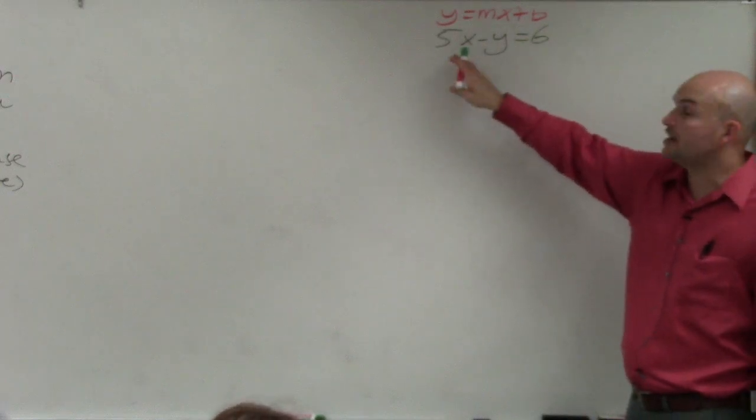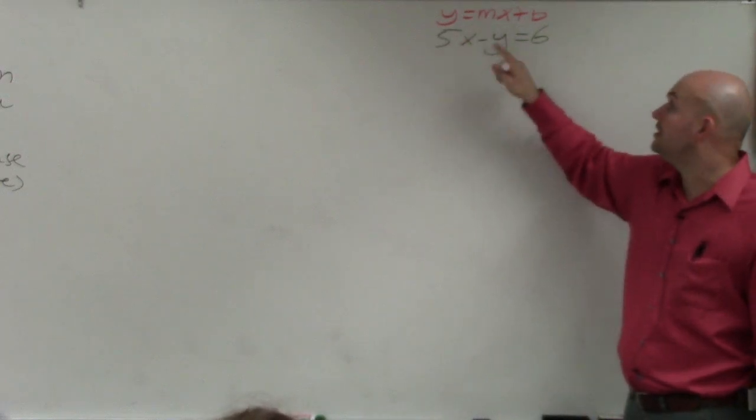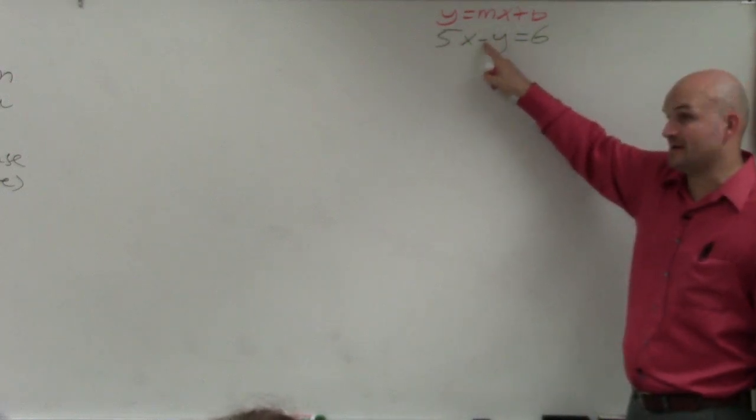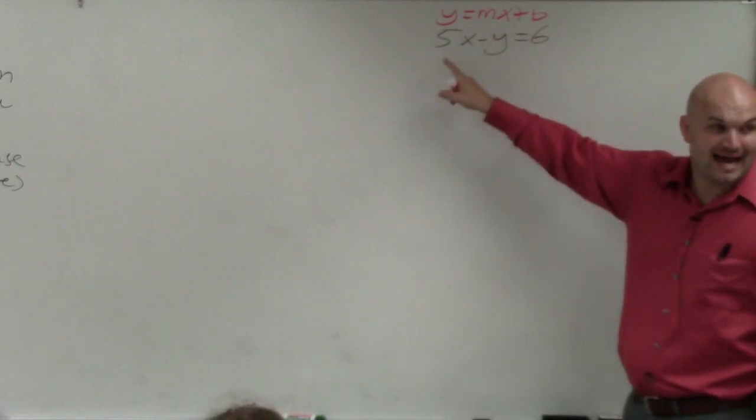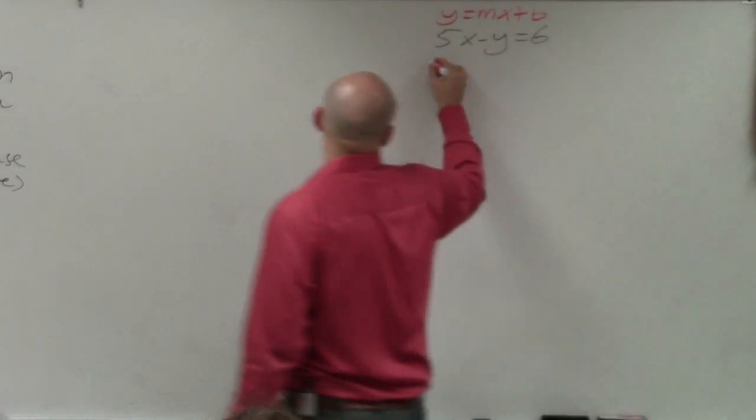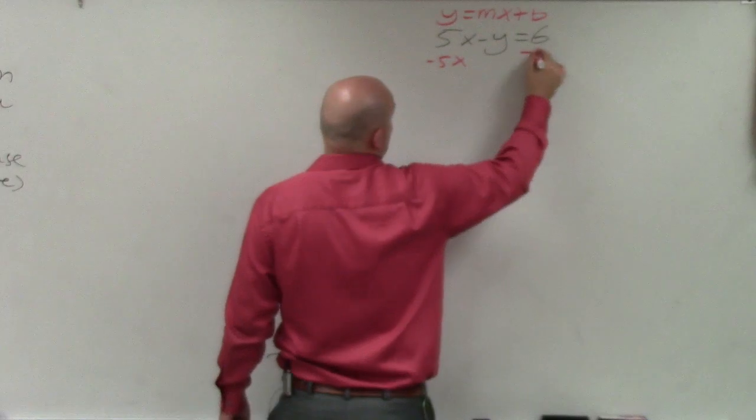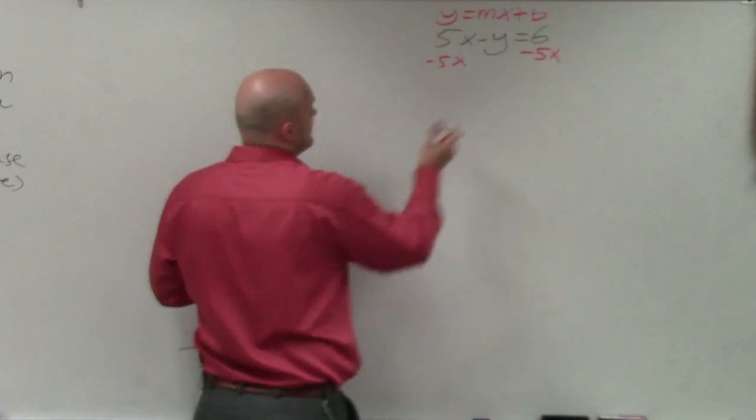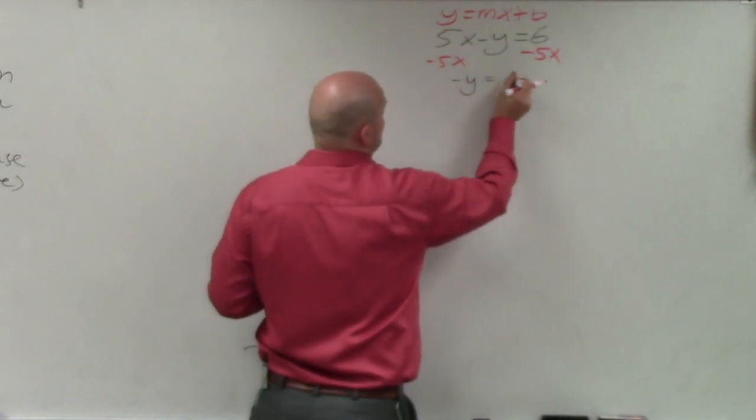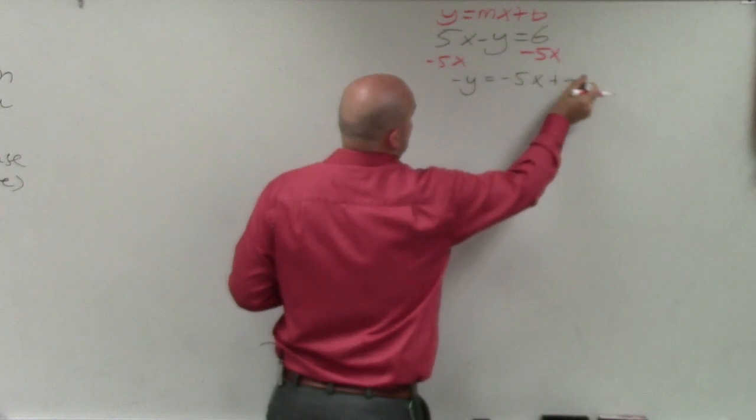So we want to look at it and see what is happening to my y variable. My y variable is being multiplied by negative 1, and it's being added by 5x. So the first thing I'll do is subtract 5x on both sides. And then I have negative y equals negative 5x plus 6.